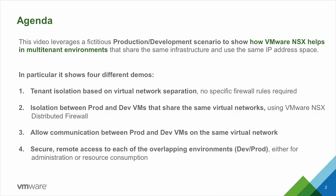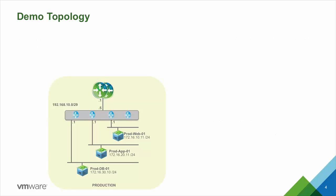Let's have a closer look at the demo topology. On the screen we have our production environment, which comprises three different subnets — web, application, and database — all connected to the NSX distributed router, which in turn connects to the NSX Edge, the green router on top.